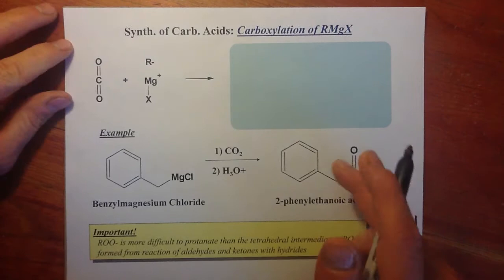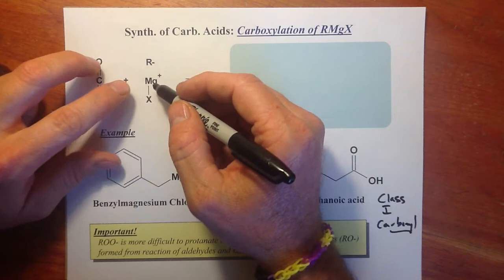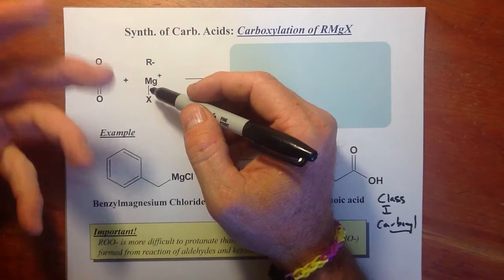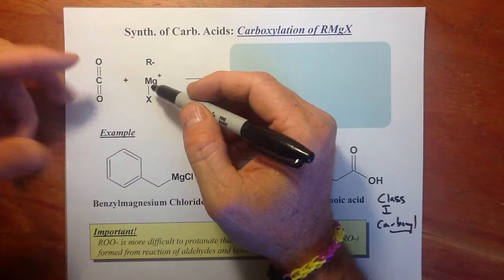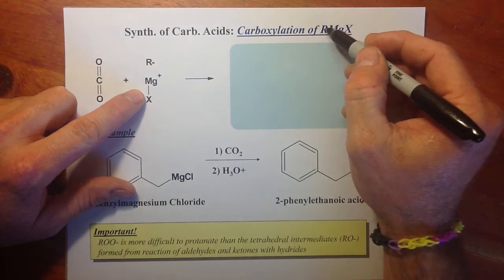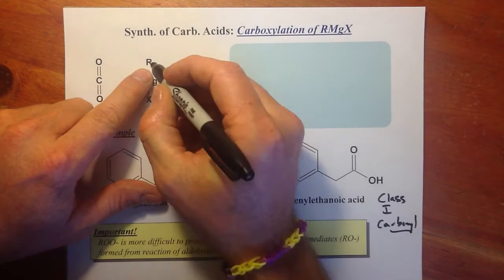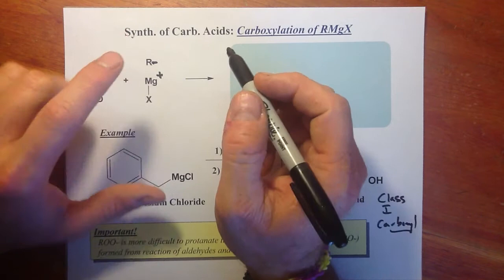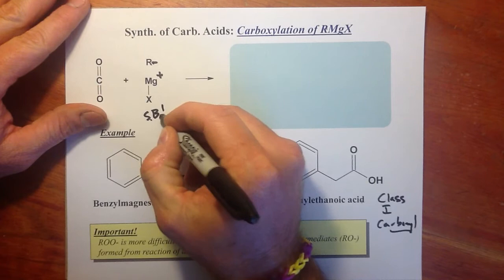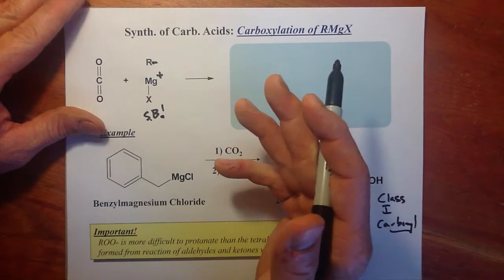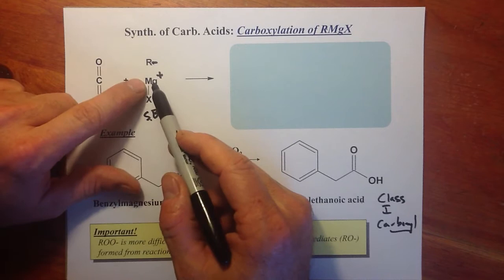We have carboxylation of a Grignard reagent. Magnesium, an alkaline metal, is typically not electronegative — it gives up its electrons significantly, making the bond almost completely ionic. Instead of drawing the R–Mg bond as covalent, we consider it ionic, giving those two electrons back to the alkyl group as a full negative charge. Grignard reagents are very strong bases. You can't have water with them; if you do, you'll kill your Grignard reagent.